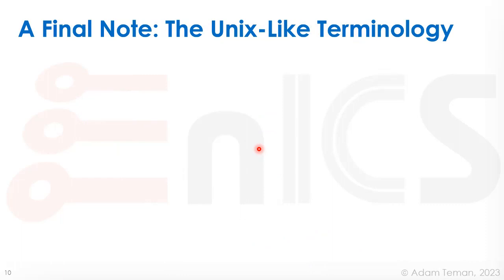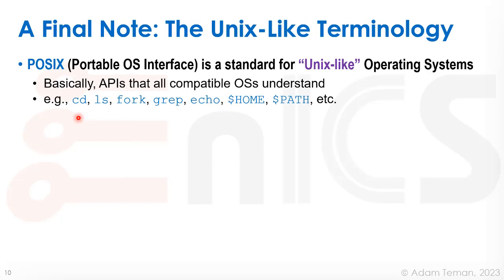A final note — some Unix-like terminology you'll hear in your professional life. POSIX, or the Portable OS Interface, is a standard for Unix-like operating systems. It's basically APIs that all compatible OSs understand — things like cd, ls, fork, grep, echo, $HOME, $PATH. These are defined in POSIX. It also defines how threads and processes run, providing an architecture so different operating systems are relatively compatible when interpreting basic commands.